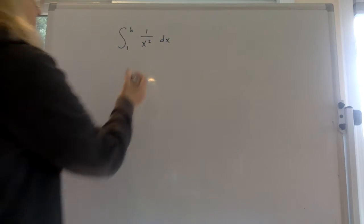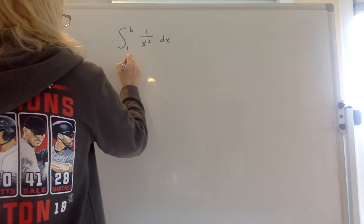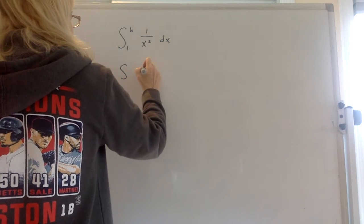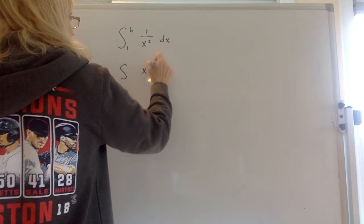The key to this problem is to rewrite the 1 over x squared to move the x squared to the top of the fraction. So what do you have to do with the x squared? You're going to get a negative 2.